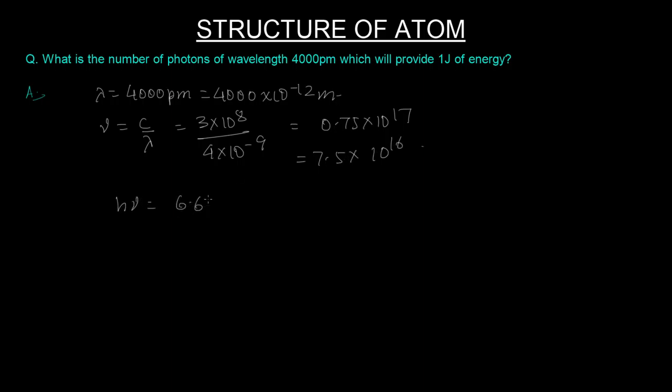Now h times ν gives you 6.6×10^-34 × 7.5×10^16. This is the energy of one photon. Let me do this on a calculator: 6.6 × 7.5 equals 49.5, so that is 49.5×10^-18 joules. This is the energy of one photon.